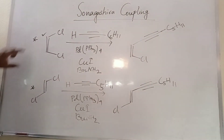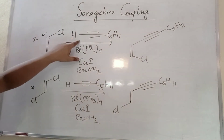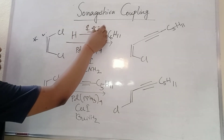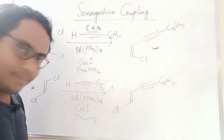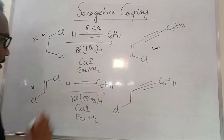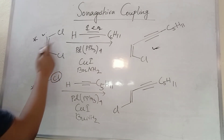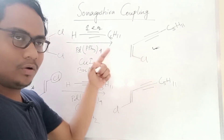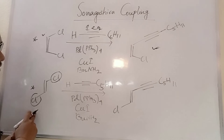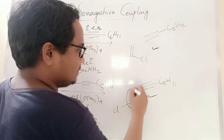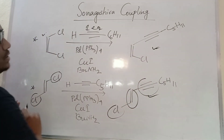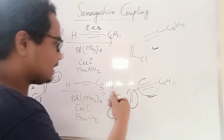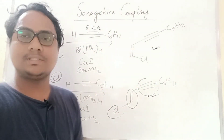Simple example: 1,2-difluoroethylene compound with a terminal alkyne, palladium catalyst, copper iodide, and base — using one equivalent, only one coupling occurs, giving a mono-coupled product. The geometry of the double bond is retained: if cis (Z), the product has Z configuration; if trans (E), the product is E. So bond orientation is retained in Sonogashira coupling, similar to Suzuki coupling.